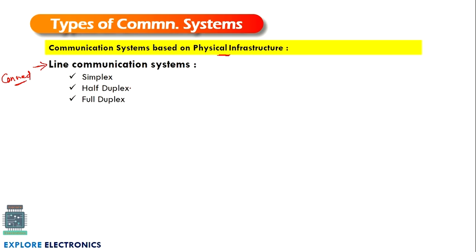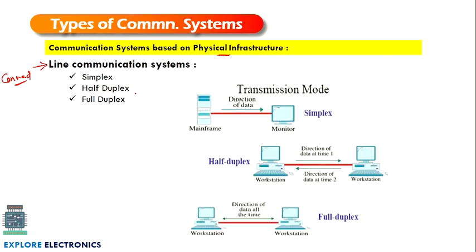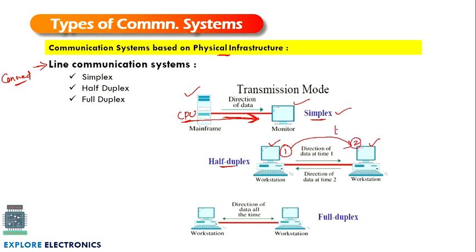The first category is line communication, where two devices are connected through a wire, twisted pair of cable, or a coaxial cable. Within this, there are three types: simplex, half duplex, and full duplex. Simplex is one-way communication — for example, a CPU sends data to a monitor, but the monitor does not send data back. Half duplex means two computers send and receive data to each other, but at different times — one sends while the other waits.